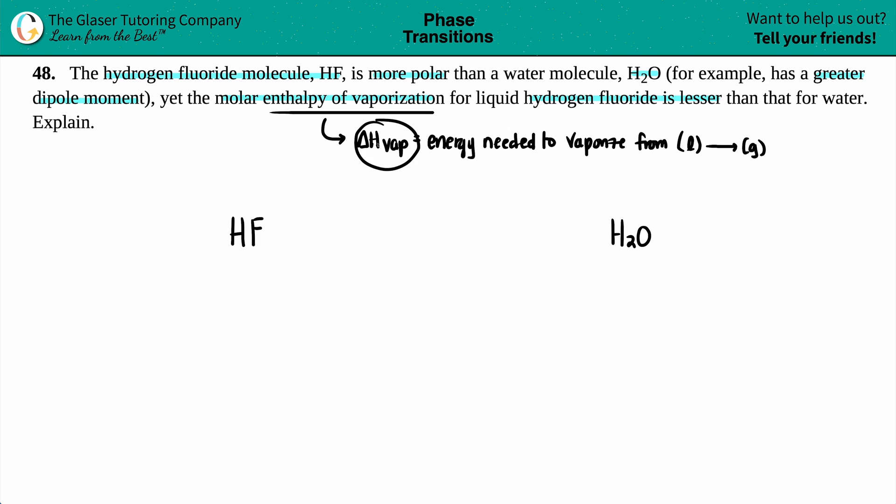From a liquid always going to a gas. So when you're talking about delta H vaporization, you always have your substance starting off as a liquid and ending up as a gas.